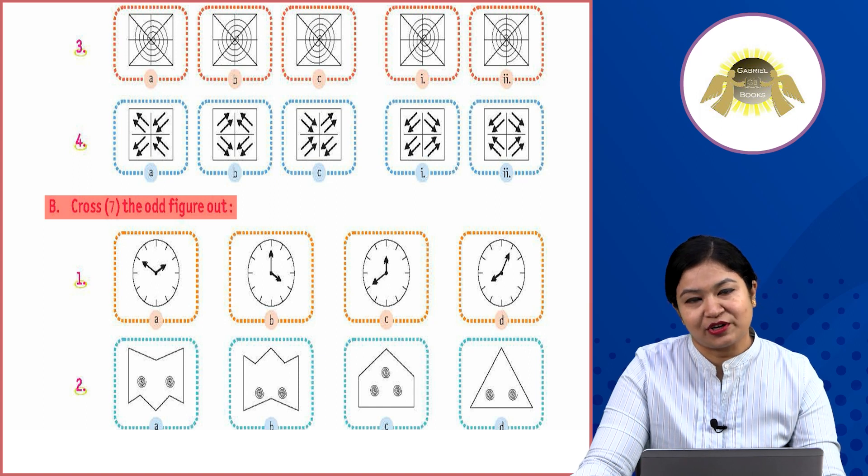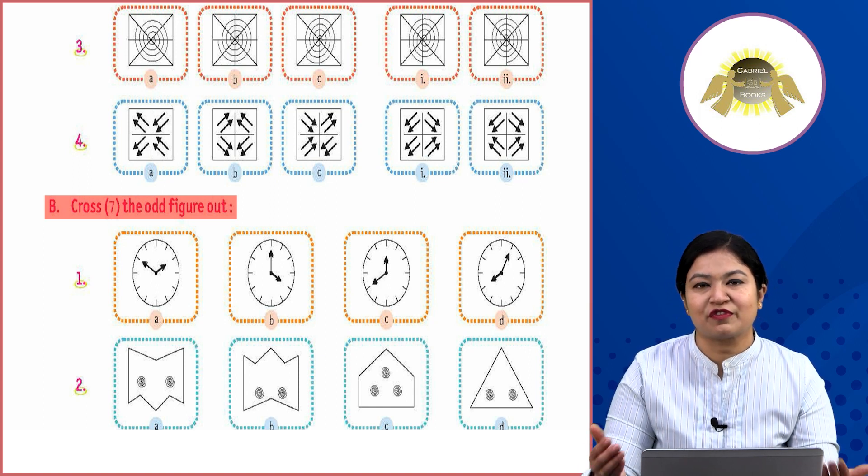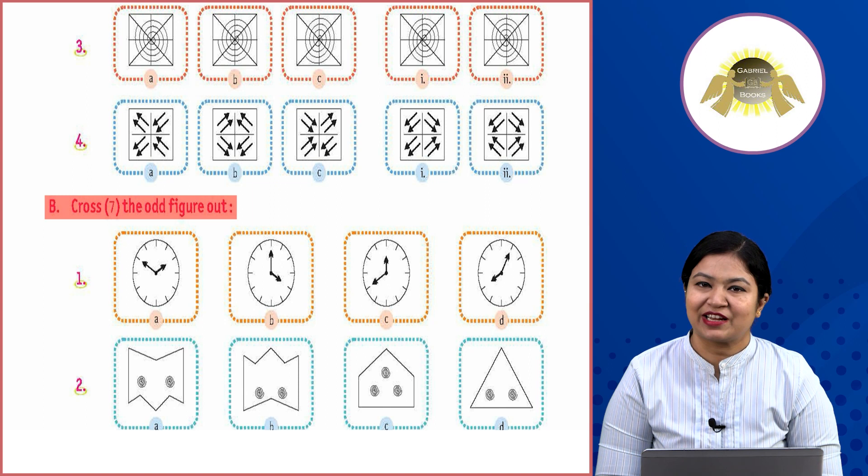Circle D as the odd one — D is the complete circle. A is also a complete circle. Revision practice.